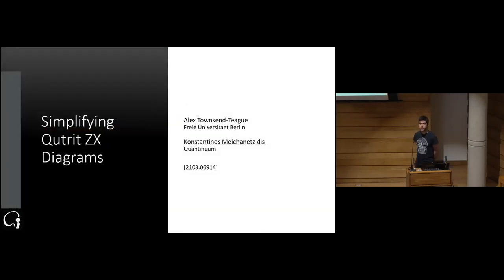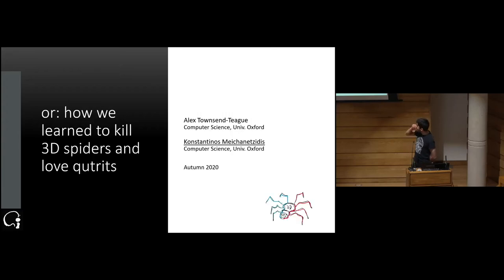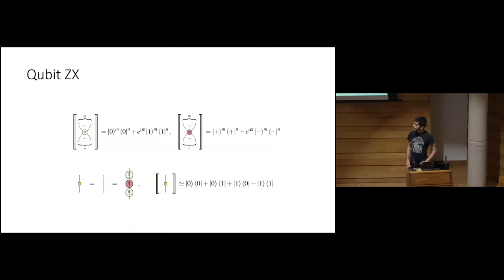The next talk presents the result of a master project by Alex Townsend-Teague when he was at Oxford, co-supervised by Alex, now on the arXiv. It's about how to efficiently kill stabilizer q-trit spiders — basically graphical Gaussian elimination for the q-trit version. This work was done in autumn 2020.